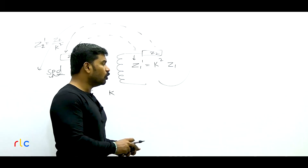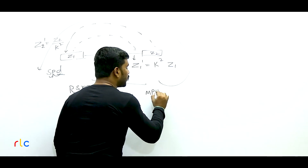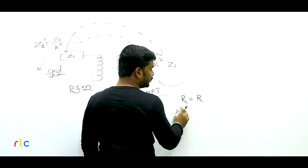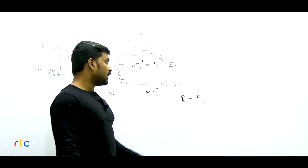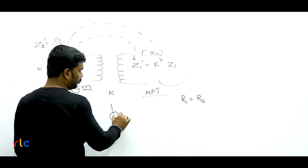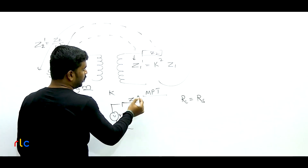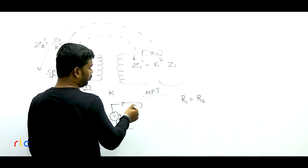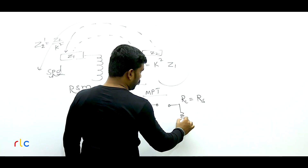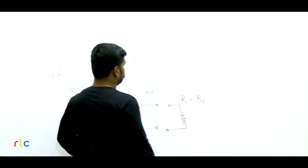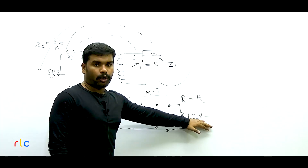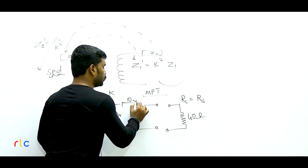Consider a source with impedance Z = 10 ohms and a load of 40 ohms. Maximum power transfer cannot occur because load resistance differs from source resistance. We cannot modify either. So we use an impedance matching transformer placed between source and load with a turns ratio of 1:2, meaning K = N2/N1 = 2.